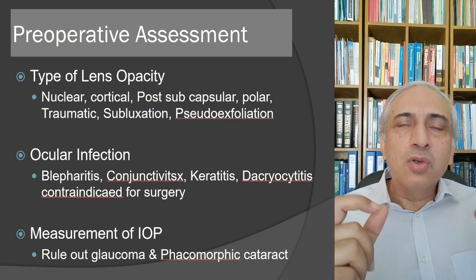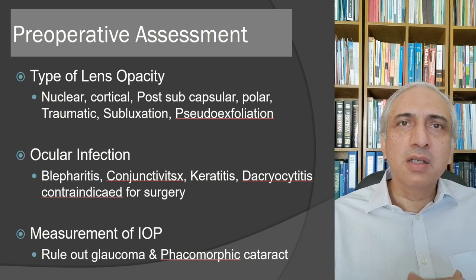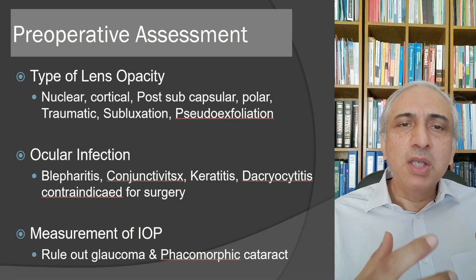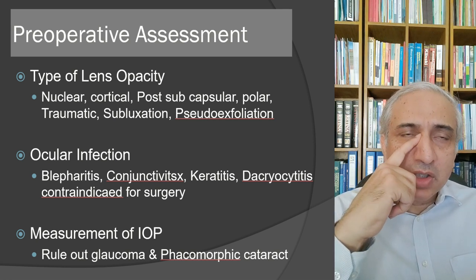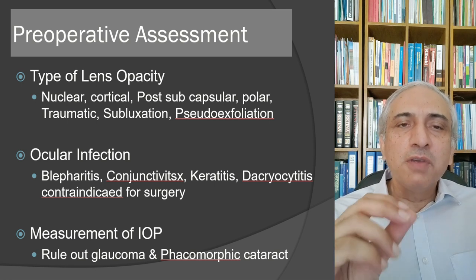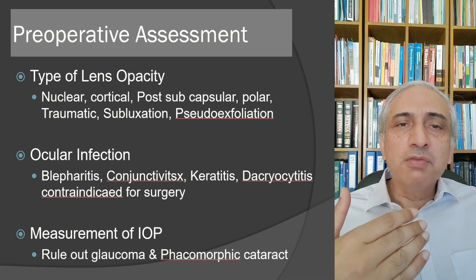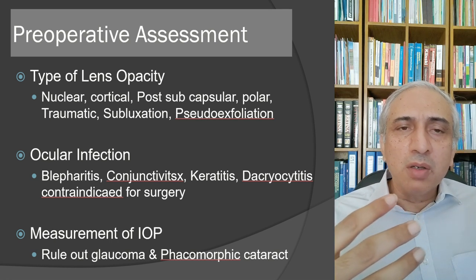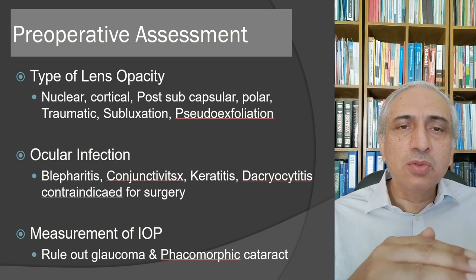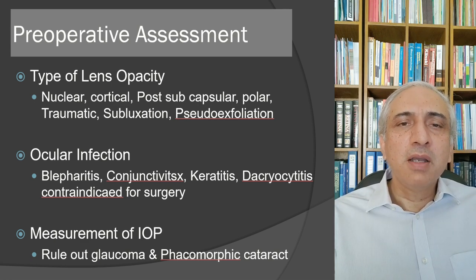Ocular infection must be excluded because endophthalmitis is the worst complication — the patient can go blind. Exclude blepharitis, conjunctivitis, keratitis, and dacryocystitis. A positive regurgitation test is a contraindication to cataract surgery until fixed with a DCR. Measurement of intraocular pressure is critical — a pressure of 30–35 mmHg at the time of incision can precipitate an expulsive hemorrhage.